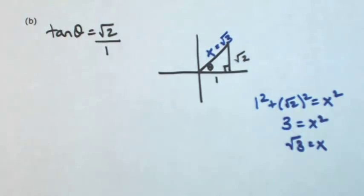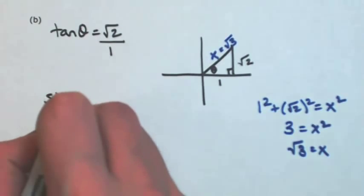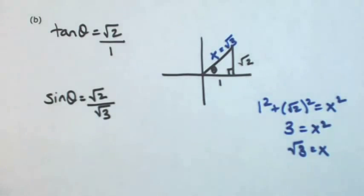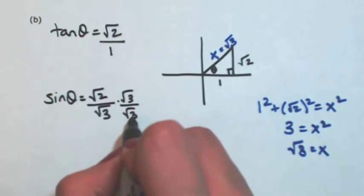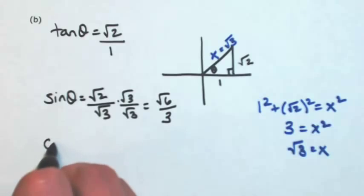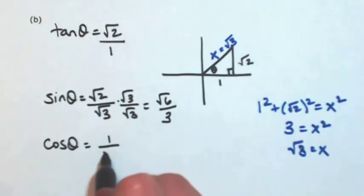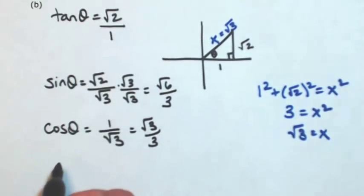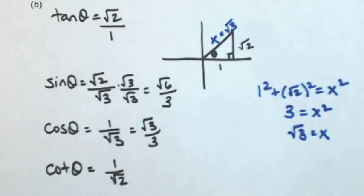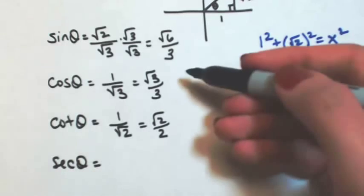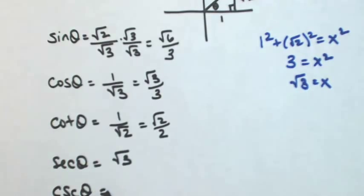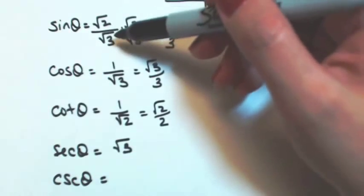Once I have all the sides, it's pretty simple. Sine of theta is opposite over hypotenuse: square root of two over square root of three, which rationalizes to square root of six over three. Cosine of the angle is adjacent over hypotenuse. Tangent was given, so now I'll use all the reciprocals: cotangent of theta is one over square root of two. Secant of theta is the reciprocal of cosine — going back before rationalizing to take the reciprocal. And cosecant of theta is the reciprocal of sine: square root of three over square root of two.